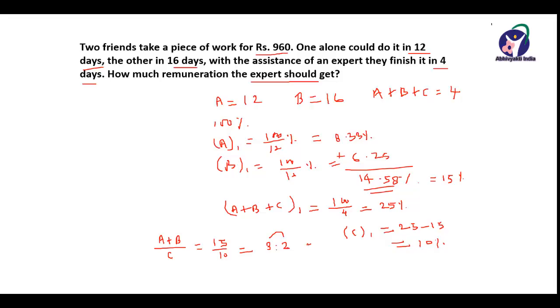So the wages will be divided into 3 is to 2. The total parts will be 5. Out of 5, 3 parts will go to A plus B and 2 parts will go to C. And we have to find the C's share in the wages. So it will be equal to 960 divided by 5 multiplied by 2 parts. So multiplied by 2 that is equal to 384.